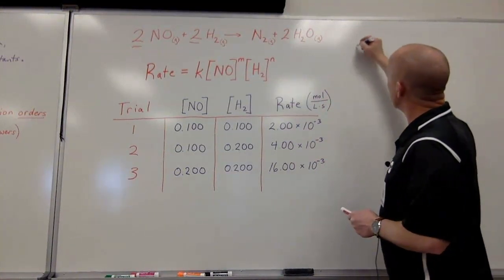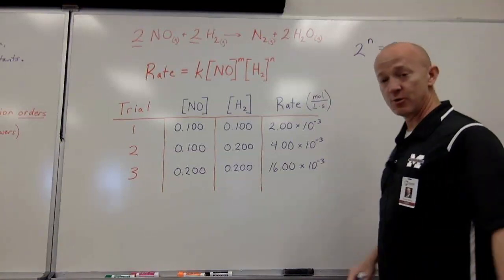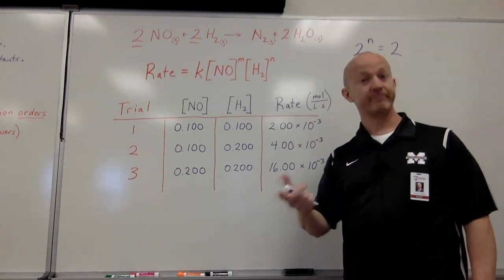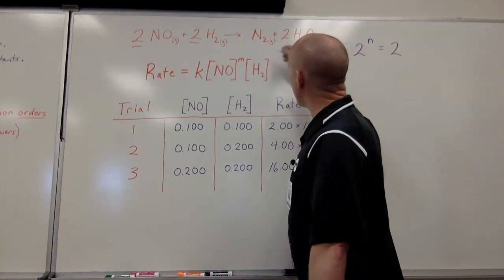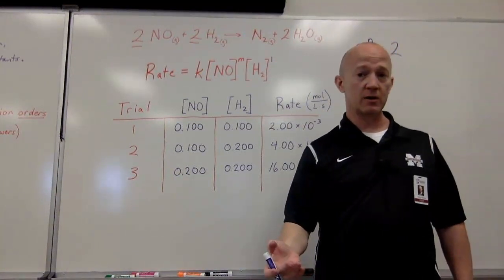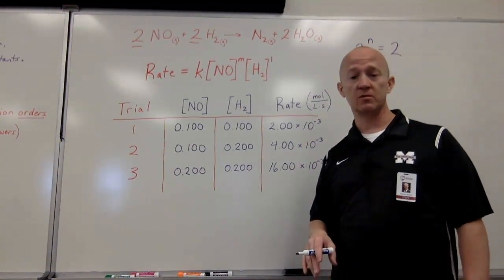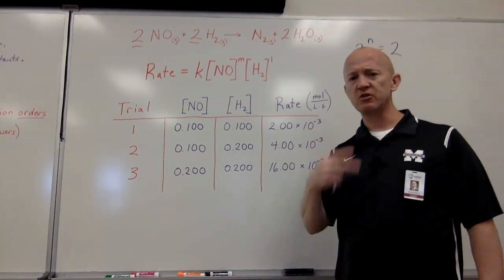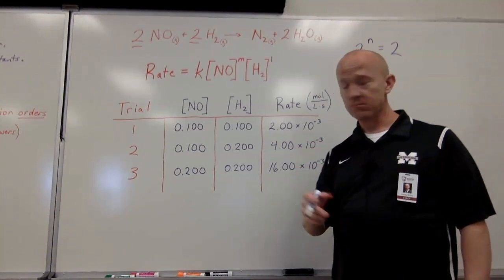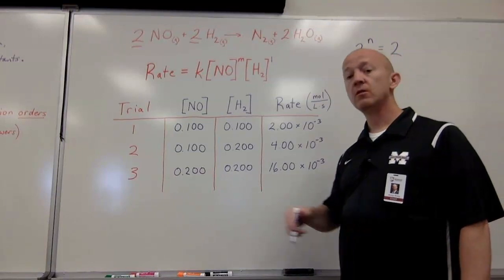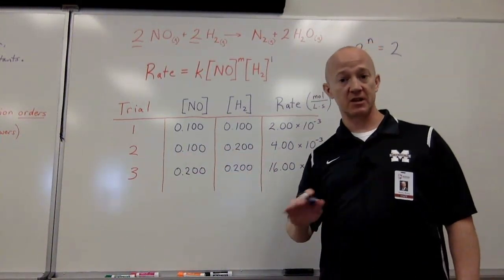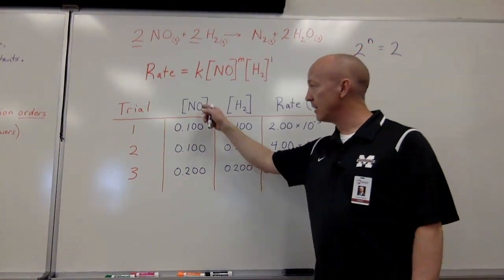From trial one to trial two, nitrogen monoxide had no change, but hydrogen was doubled. The rate also increased by a factor of two. We can solve for n by saying 2 to the nth power equals 2, so n equals 1. That means my reaction order for hydrogen is 1 — first order. You don't have to write the 1 explicitly; it can be understood, but we'll write it to avoid confusion. Now let's solve for m using two trials where hydrogen stays the same but nitrogen monoxide changes.